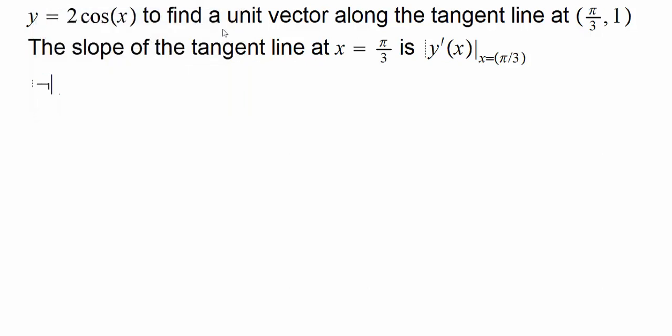We have 2 cosine x, so the derivative would be -2 sine x. And if we compute the value of the derivative at π/3, then that would be -2 times, what is sine π/3? That is the square root of 3 over 2. And the 2's cancel, and then we simply get -√3.